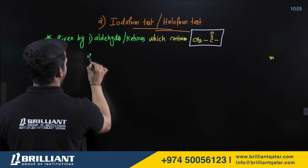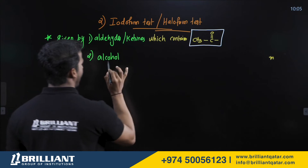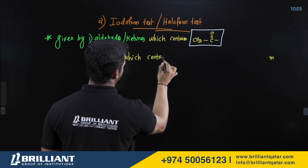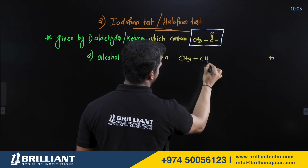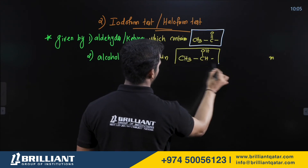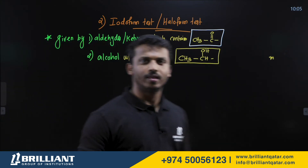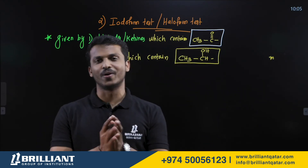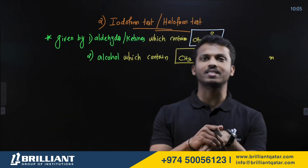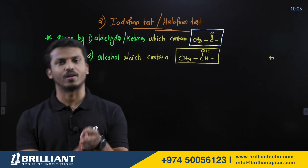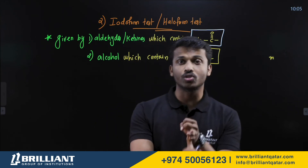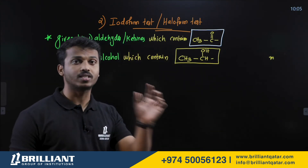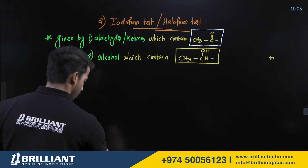This test is also given by alcohols, but the alcohol must contain the CH₃CH(OH)– group. So to conclude: the Iodoform test is given by aldehydes and ketones containing CH₃CO– group, and by alcohols containing the CH₃CHOH– group. Iodoform test is also known as the Haloform test because iodine is a halogen.